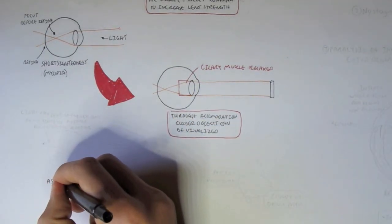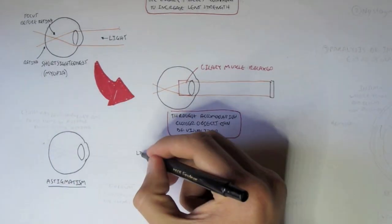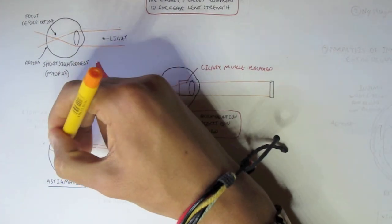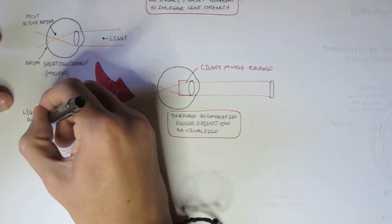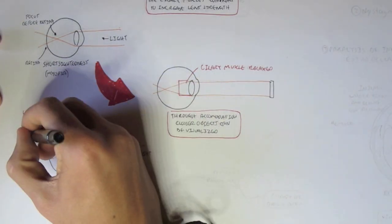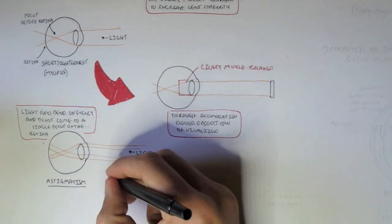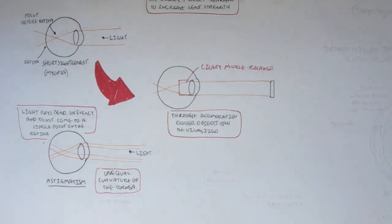Now the next eye condition or disorder is known as astigmatism. And it is where light will normally come in. However, the refraction from the lens, it does not all end up at the same area at the back of the retina. So light rays bend unevenly and do not come to a single focus on the retina. Unequal curvature of the cornea can cause astigmatism.